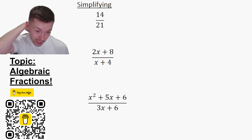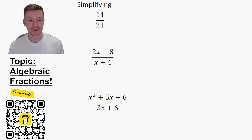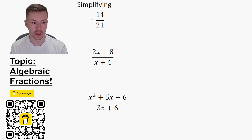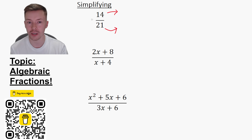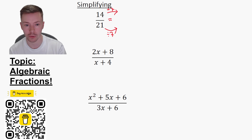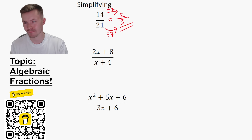So first things first — simplifying. And it starts off in the same way that you would simplify a normal fraction. So top and bottom here, you divide by seven because that is the highest common factor. 14 divided by seven is two, 21 divided by seven is three, so we get two thirds. That's fairly straightforward.